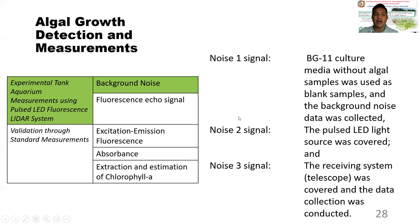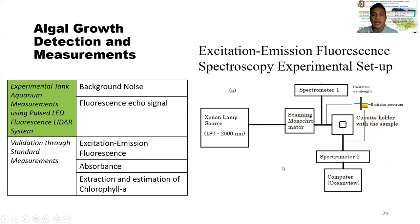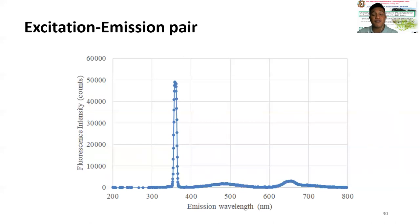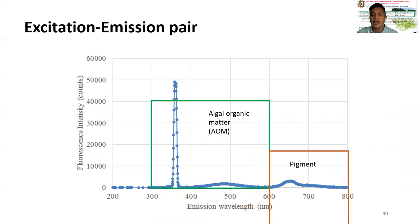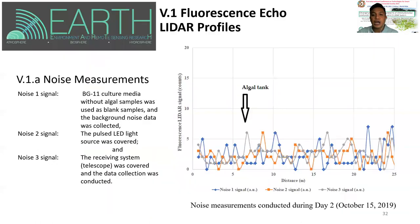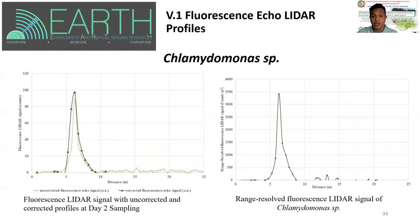For the LiDAR system, we initially measured background noise using three different signal types: first, culture media without the algal sample; second, by covering the LED transmitting system; and third, by covering the receiving system. The standard measurements used are absorbance spectroscopy or optical density measurements, and fluorescence measurements. This is an example of fluorescence measurement collected from the spectroscopy setup, showing the excitation wavelength, the algal organic matter component, and the pigment component. Notice there are no significant differences between the three noise signals. This is the fluorescence echo LiDAR signal with corrected and uncorrected data.